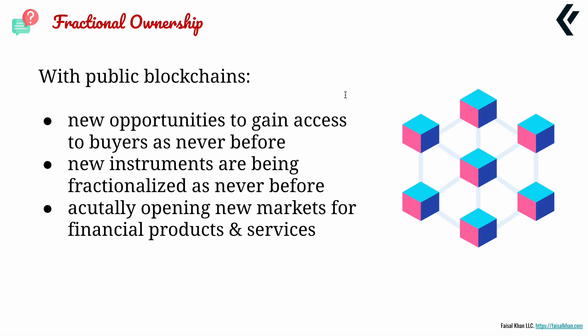New opportunities for buyers as never seen before — you can get access to buyers and create, for example, an index of eggs, platinum, gold, hay, pork bellies, meat, wheat, Ford shares, IBM shares, Apple shares, and the S&P 500, put it on the blockchain because it won't be as volatile. New instruments are being fractionalized as never before — previously you'd have to own all of these outright and offer them only to a very specific segment. Now we can offer it to all segments.